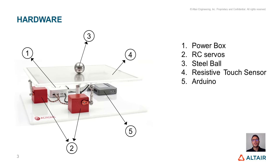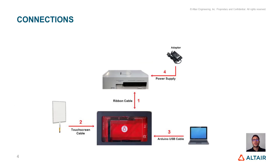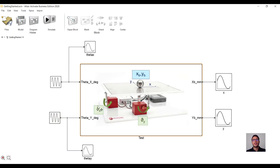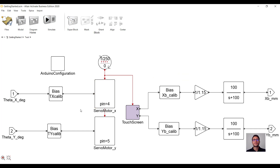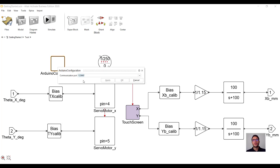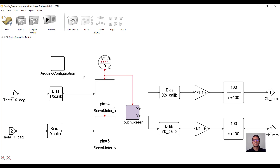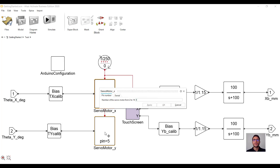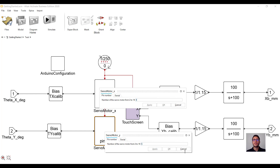Let's see how we connect it to Alter Activate. Once you have plugged in all the cables as shown in this picture, and once you have installed the Arduino library as explained in the manual, let's open Alter Activate. Let's have a look at this superblock. Every time we want Activate to communicate with the Arduino, we need to open a communication port, and we do it through the Arduino configuration block. Then we can recognize our two servo motors, whose pin numbers are respectively 4 and 5.